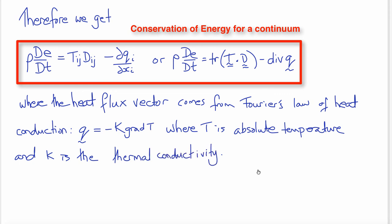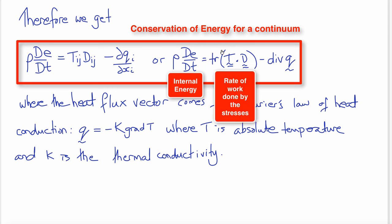This is the conservation of energy for a continuum. It includes three terms: the internal energy, the rate of work done by the stresses — which derived from the work done by the body and surface forces and was simplified by application of conservation of linear momentum — and then the rate of heat entering the system.